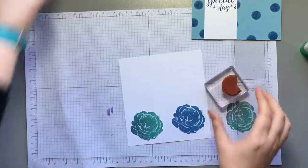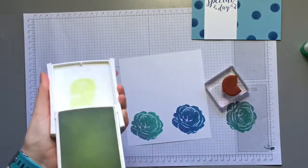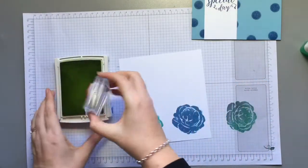Then I'm grabbing the leaves from the Healing Hugs set and inking them up in Lemon Lime Twist.